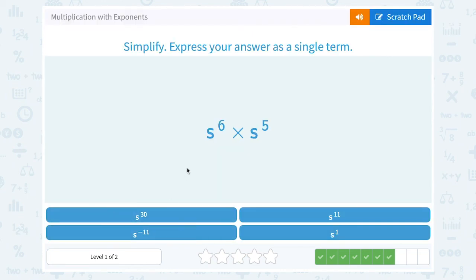s to the 6th times s to the 5th. The base would stay the same, it would stay s, and we would add the exponents. So 6 plus 5 would give me an exponent of 11. So s to the 11th power.